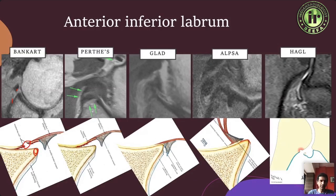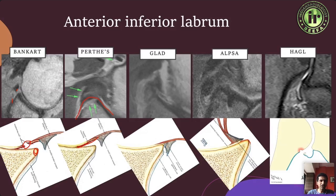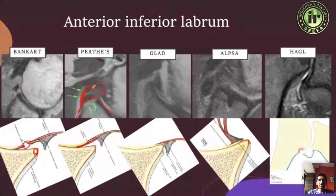The second lesion is the Perthes lesion. If you weren't quite as forceful, you get something where the periosteum strips off but doesn't actually break. You can see the anterior glenoid here, and the black structure is the labrum — this labrum coming off with the periosteum still continuous is called a Perthes lesion.